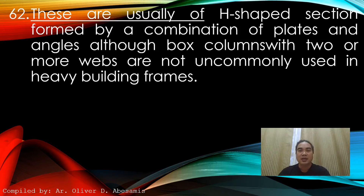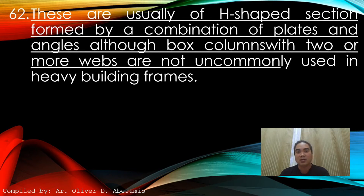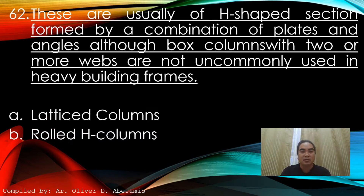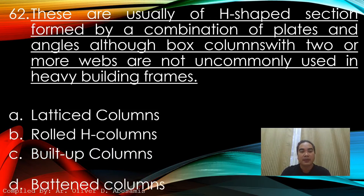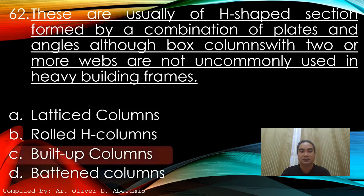These are usually of H-shaped section formed by a combination of plates and angles, although box columns with two or more webs are not uncommonly used in heavy building frames. A. Lattice column. B. Rolled edge column. C. Built-up columns. D. Buttressed columns. Answer: C. Built-up columns.